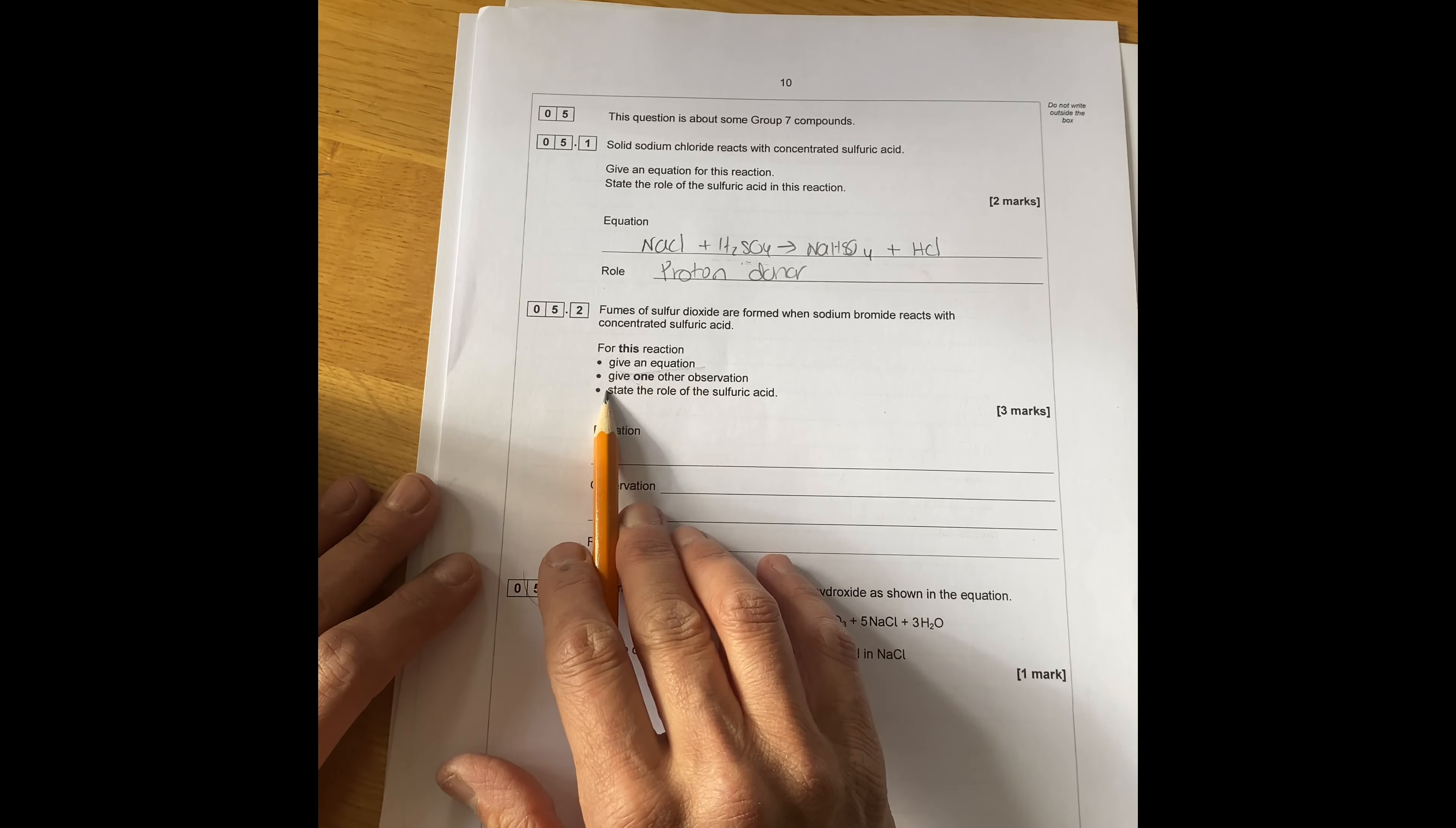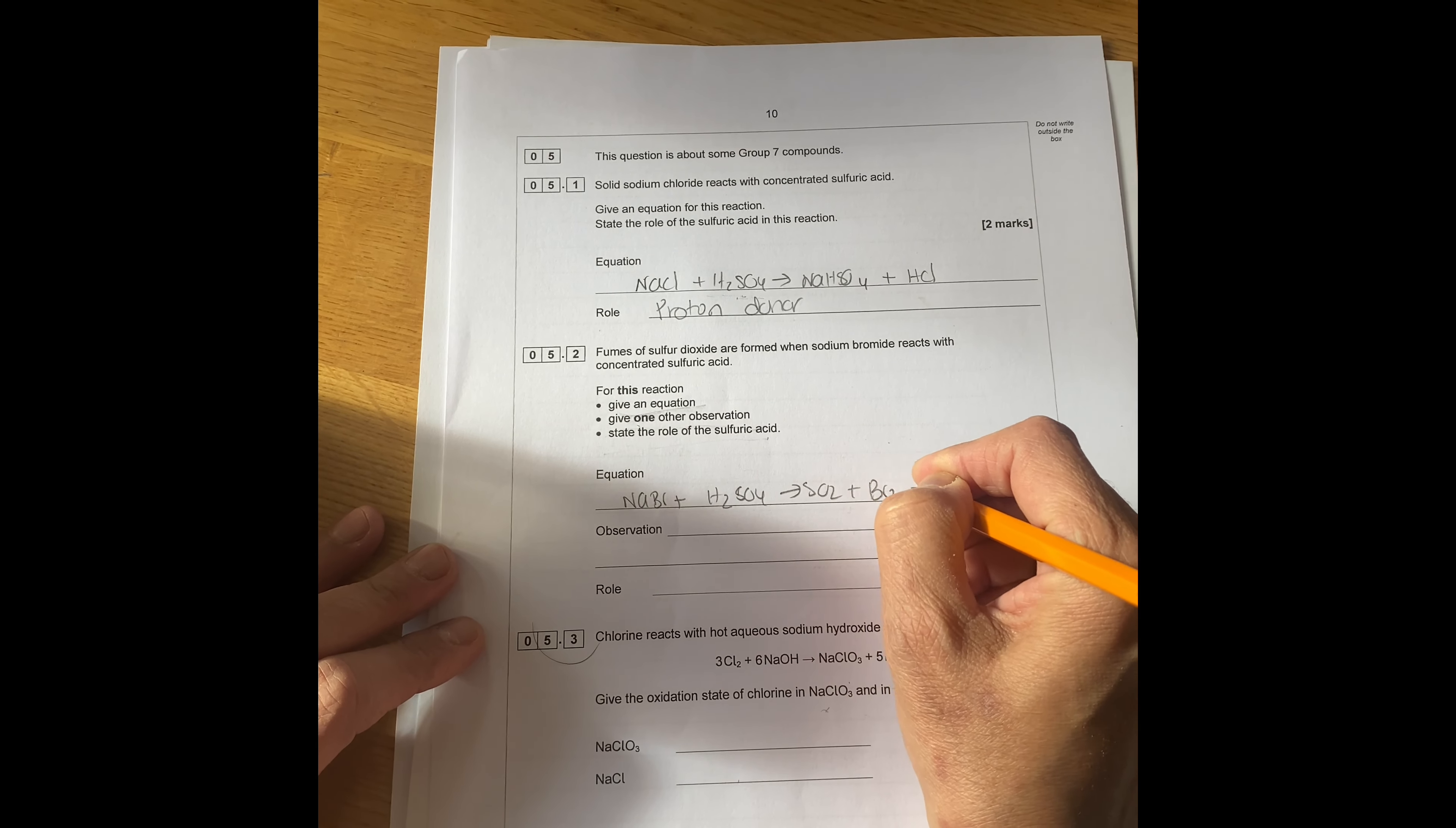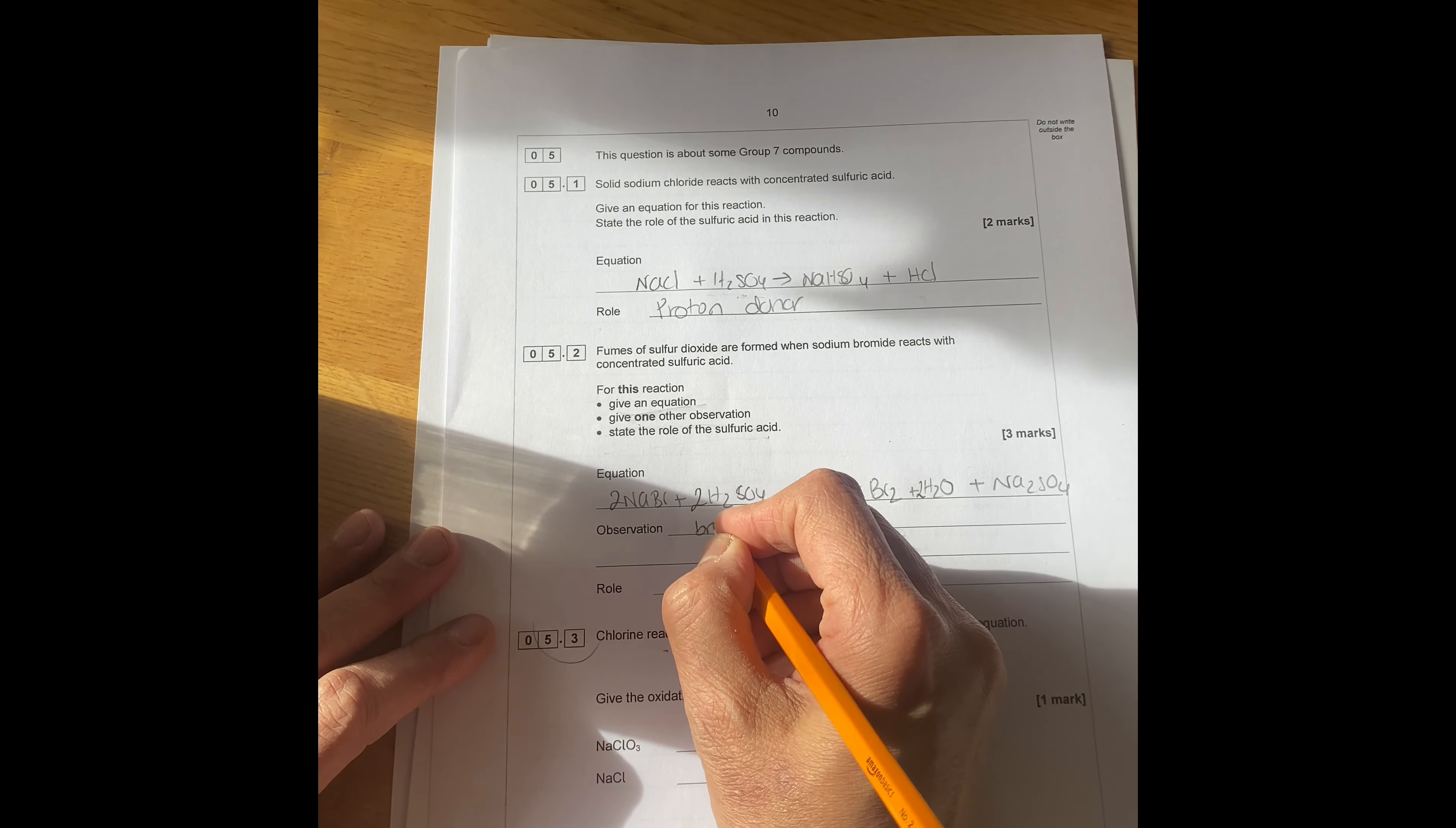Fumes of sulfur dioxide are formed when sodium bromide reacts with concentrated sulfuric acid. For this reaction, you have an equation, given one other observation and state the role of sulfuric acid. So the equation for this is going to be sodium bromide plus sulfuric acid goes to SO2 plus Br2 plus water plus sodium sulfate or sodium hydrogen sulfate. You have to balance this equation.